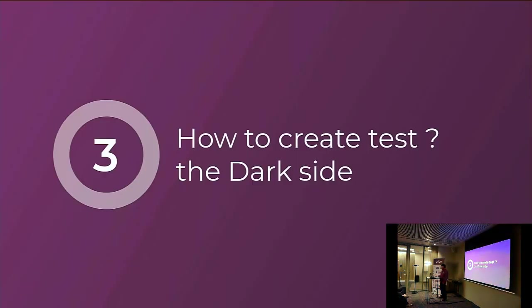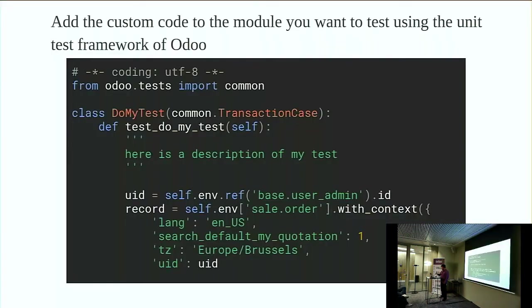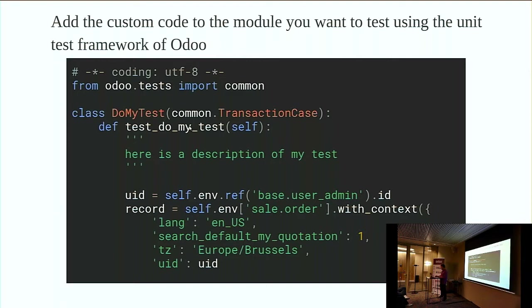Once you've recorded the flow, you want to create the test. You go to the backend and use Odoo's unit test framework. Even though the framework is made for unit tests, we use it to test integration aspects. Basically, I copy-paste the code from the interface into my editor and have some things to change. We create a test the same way we would use the unit test framework — import TransactionCase, have a method starting with 'test something', and copy-paste all the code underneath.